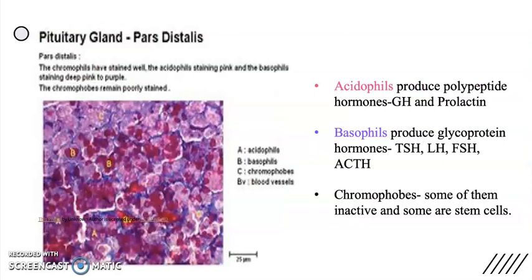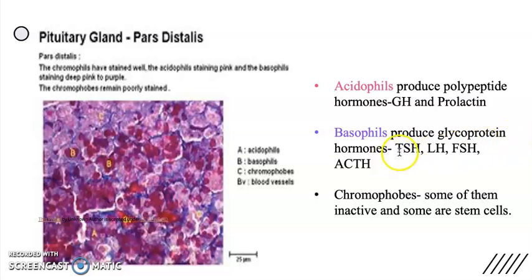Although you will not be asked to identify the cell types from the glandular tissue of the anterior pituitary gland, it is good to know there are three different groups of cells. Acidophils produce polypeptide hormones — they stain pink-reddish and they produce growth hormone and prolactin. Another type, basophils, produce glycoprotein hormones (sugar and protein hormones): thyroid stimulating hormone, LH, FSH, and ACTH. Both acidophils and basophils are called chromophils because they hold the stain well.